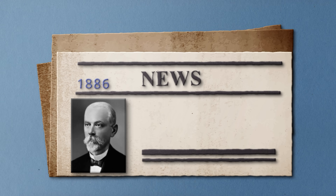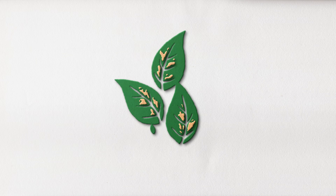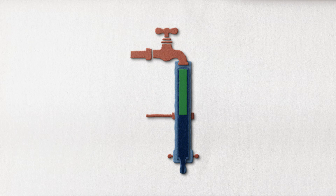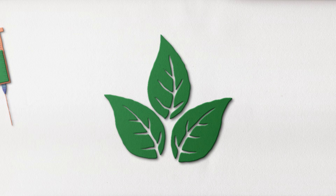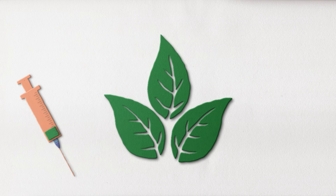Almost a decade later, in 1887, microbiology student Dmitry Ivanovski started studying tobacco mosaic disease. He first tried something similar to what Mayer had done. Ivanovski took the infected leaves' diseased sap and filtered it through a Chamberlain filter candle — a pressurized tube with a filter designed to filter out bacteria. He then injected the filtered sap into healthy tobacco leaves and waited to see what happened. And guess what? These plants became infected too.